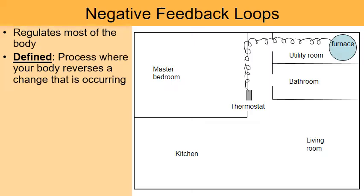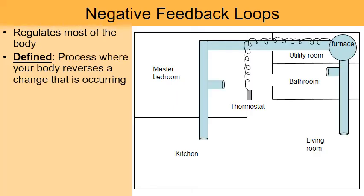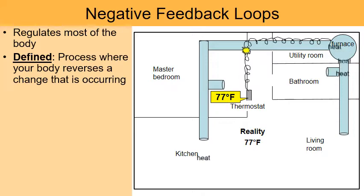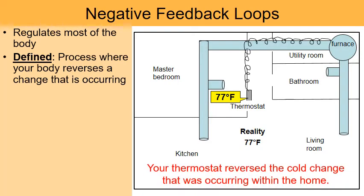The thermostat and the furnace are connected with a wire behind the walls. Coming out of the furnace are all the heating and air conditioning vents that bring warm air throughout the home. Let's pretend you set the thermostat for 77 degrees Fahrenheit, but in reality it's only 74 degrees inside. Your thermostat will turn on and send a signal to your furnace, which blows out heat through the heating ducts. Over the next couple of minutes, 74 becomes 75, then 76, then 77. Now that the reality matches the set point, everything turns off. This is a great example of negative feedback because your thermostat has reversed the cold change occurring in your house.